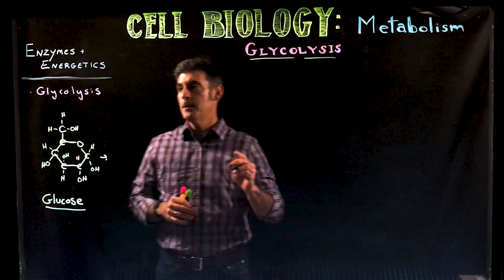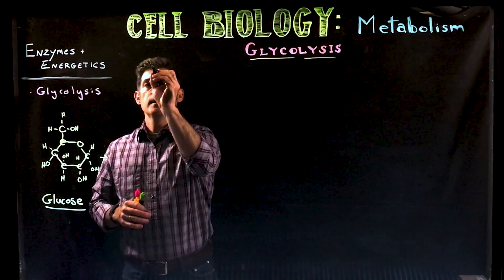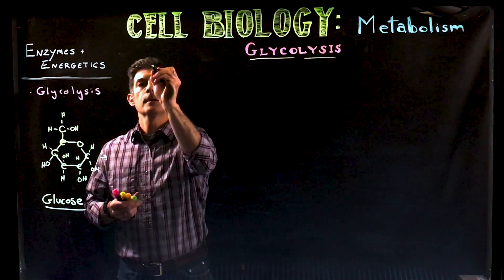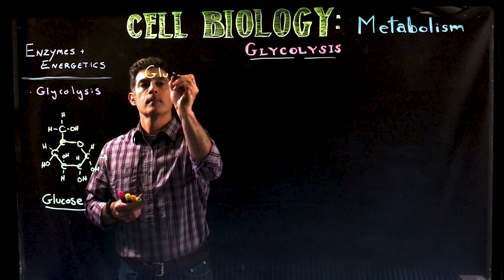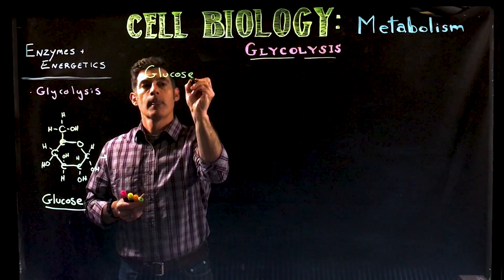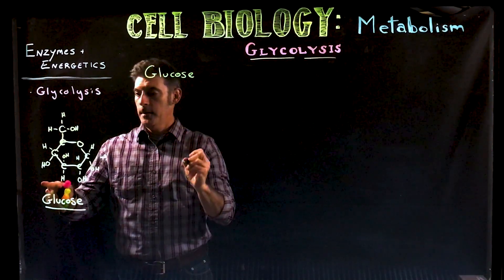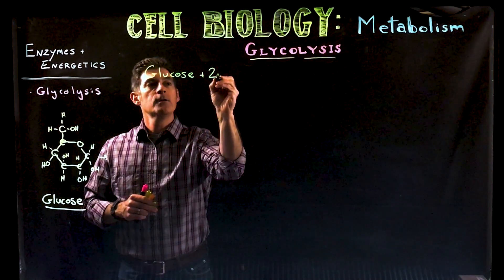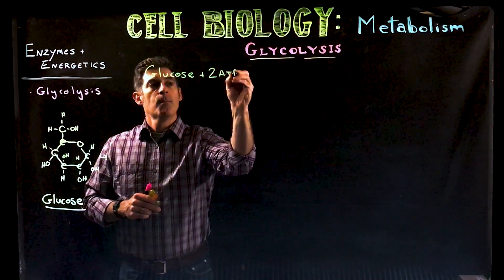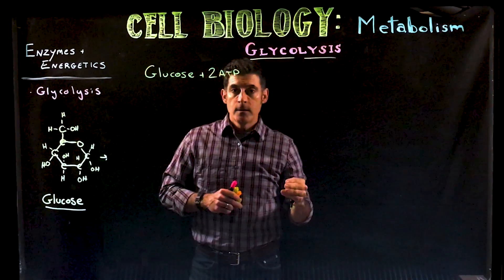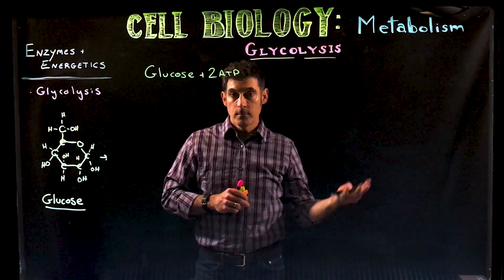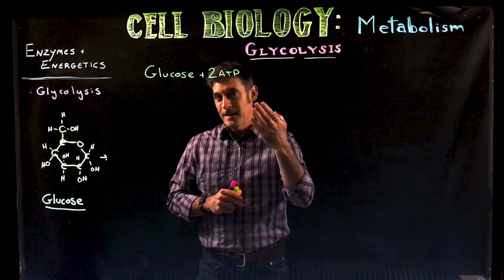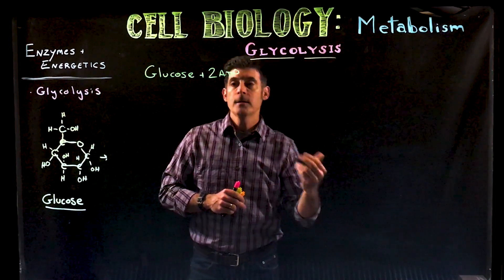The first thing you need to know about glycolysis is the equation we're going to go through. We start with glucose, and the process is going to require two ATP. Even though glycolysis will help us store and release energy in the cell, it needs some energy to get started.